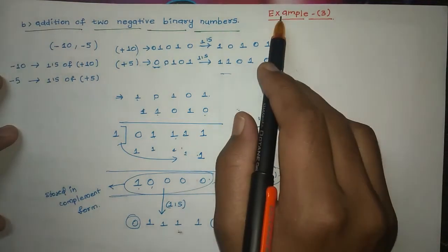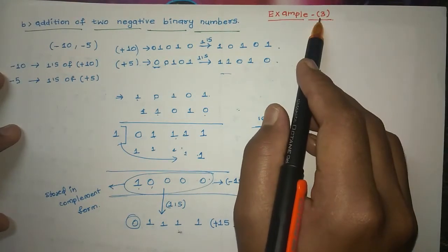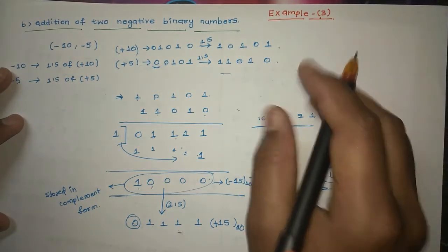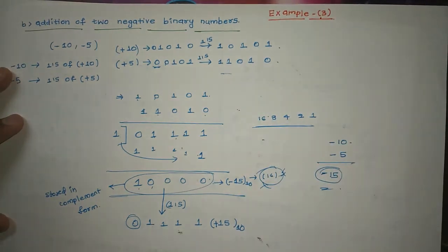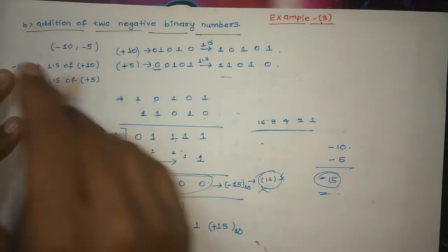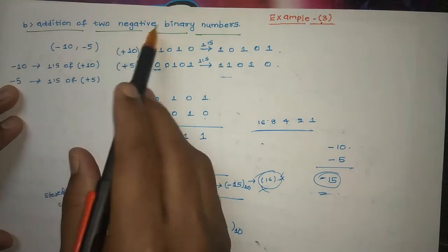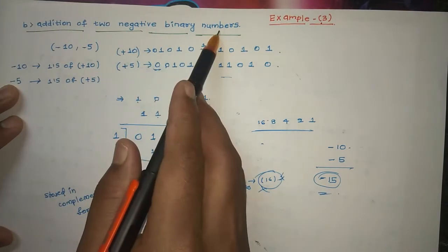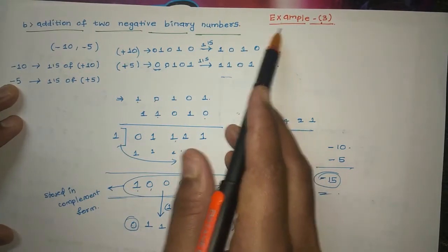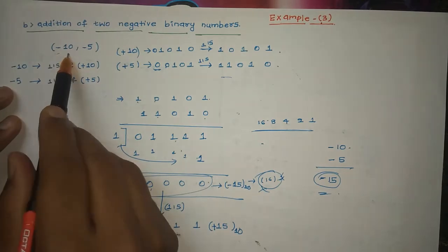This is example number three of binary addition using one's complement. If you didn't watch my previous two examples, I'll include links in the description below — it's a must-watch video, please watch before this. The example is addition of two negative binary numbers.